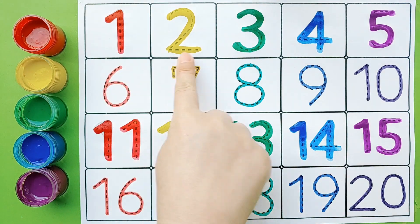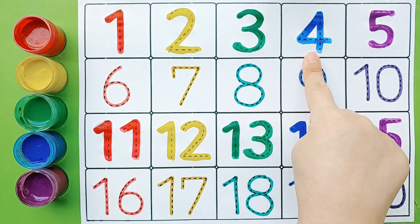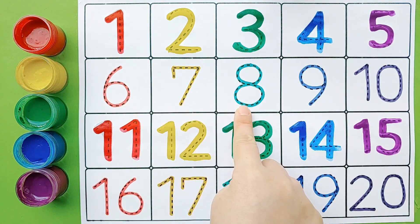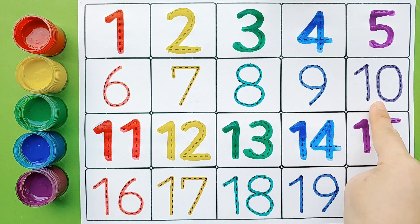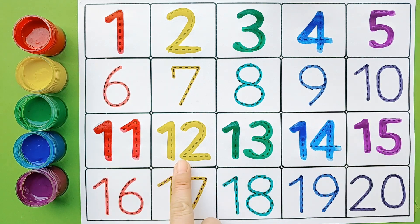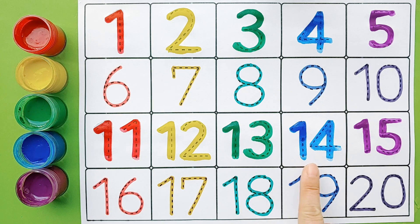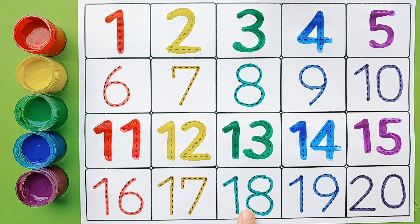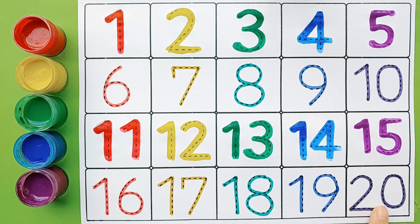One, two, three, four, five, six, seven, eight, nine, ten, eleven, eleven, twelve, thirteen, fourteen, fifteen, sixteen, seventeen, eighteen, nineteen, twenty. Twenty.